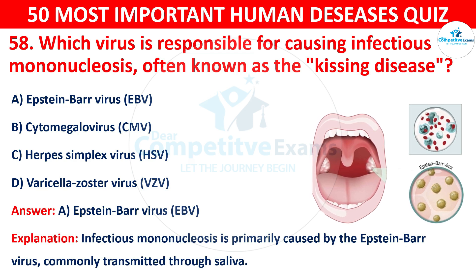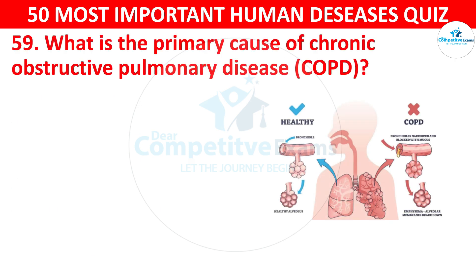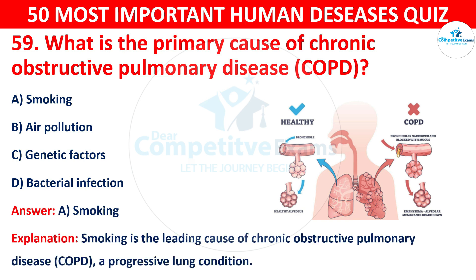Question 58: What is the primary cause of chronic obstructive pulmonary disease (COPD)? The options are: A) Smoking, B) Air pollution, C) Genetic factors, or D) Bacterial infections. The correct answer is A — smoking. Smoking is the leading cause of COPD, a progressive lung condition.